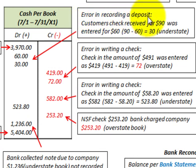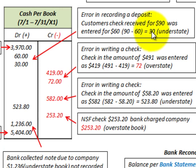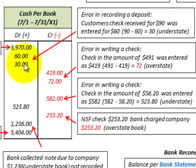First, an error in recording a deposit: a customer's check was received for $90 but entered for $60, so the difference is $30 — the book balance was understated by $30. It was entered for $60 but should have been $90, so we debit and increase our cash account by $30 to bring it up to the correct $90 amount.